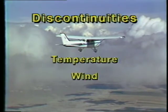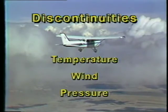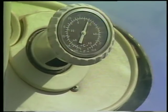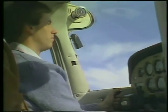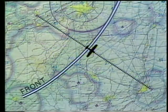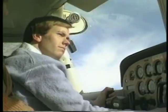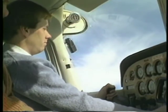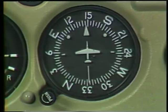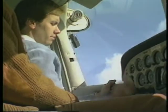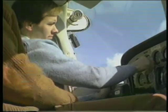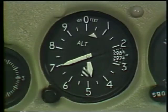As you fly across a front, you may experience discontinuities, which are rapid changes in atmospheric conditions. These include temperature, wind, and pressure. Temperature is probably the most easily noticed change, but the two which should concern you more are wind and pressure. An undetected change in the wind could cause you to drift off course inadvertently. When flying through a front, you should expect a wind shift and adjust your navigation accordingly. Since there is usually a pressure change when you cross a front, you should reset your altimeter to the correct setting to avoid being higher or lower than the indicated altitude.